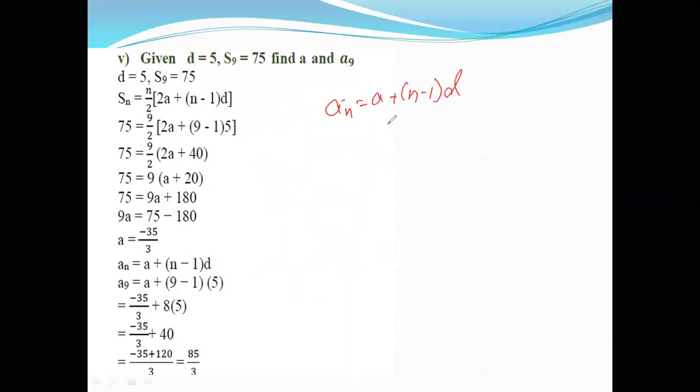So a₉ is equal to minus 35 by 3 plus 9 minus 1 into the difference, which is 5. That's minus 35 by 3 plus 8 times 5, which equals minus 35 by 3 plus 40.